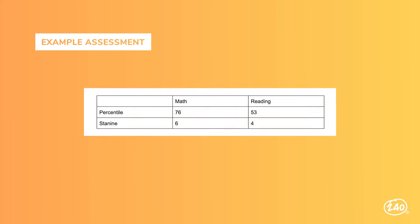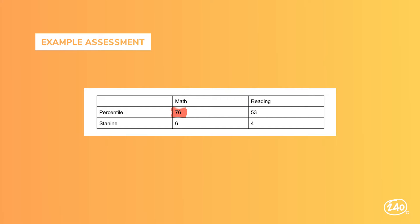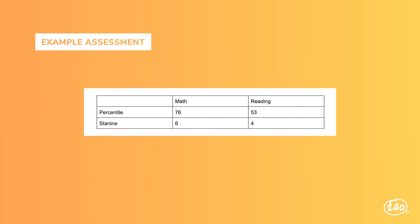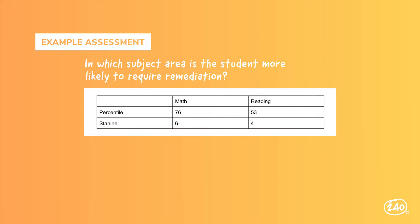Let's take a close look at percentile rank and STANINE using an example assessment showing students' results from a norm-referenced math and reading assessment. The percentile refers to the percentage of test-takers that fall below the indicated ranking. In this example, the student performed better than 76% of test-takers in math and better than 53% in reading. STANINEs are used to scale a test and provide a score of 1 to 9. The scale is based on the rank of the score, not the score itself — but even so, the higher the score, the higher the STANINE. Based on both percentile and STANINE, we can confidently conclude the student is more likely to require remediation in reading.